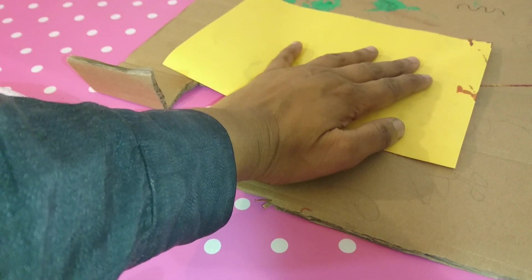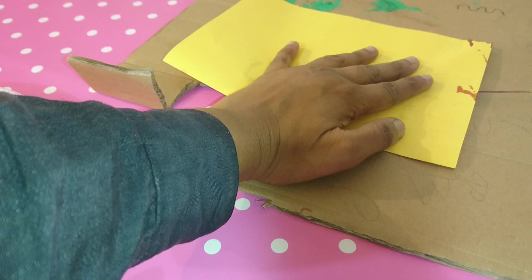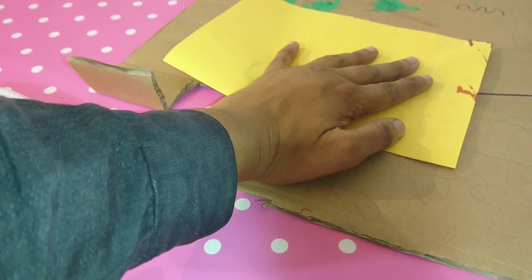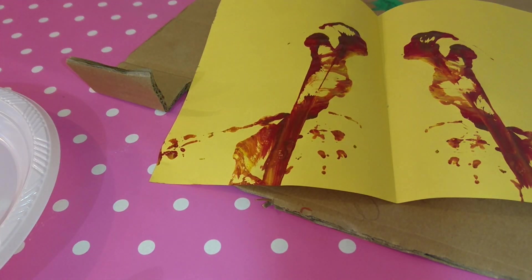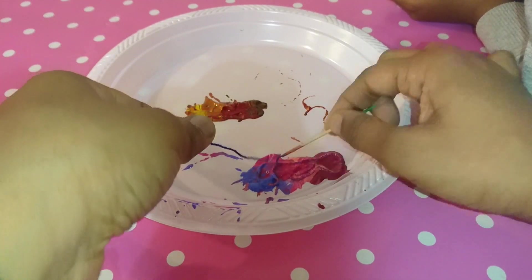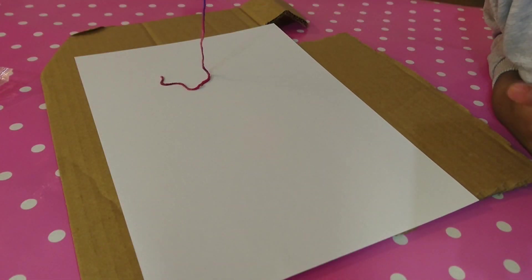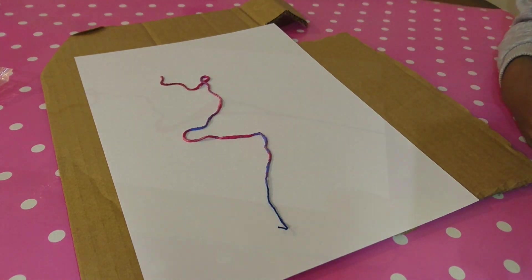Then I am folding the paper with the string inside and gently pulling the string. This is how it will look like when it is opened. Us adults can also do these kinds of arts. The process of making a pulled string art painting is captivating and mesmerizing and the results are just beautiful.